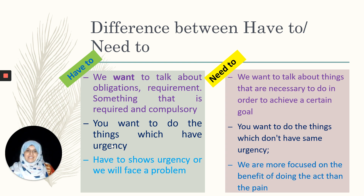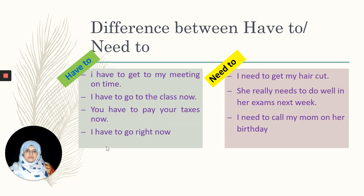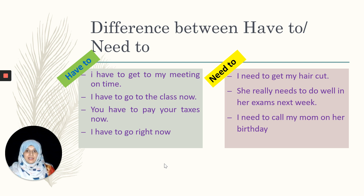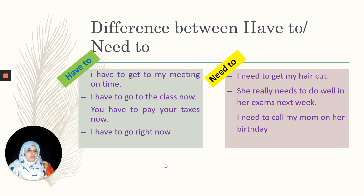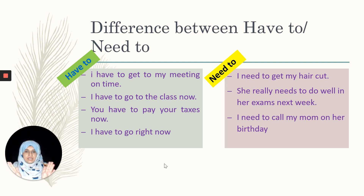Let's look at some examples — I'm sure they will clear your confusion. The first example of 'have to': I have to get to my meeting on time. Here I'm thinking about the consequences of not doing so — my boss can fire me, give me an explanation letter, or put me in an awkward situation. So I'm thinking about the problems I can face if I am not on time for the meeting.